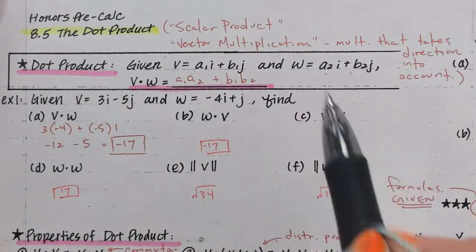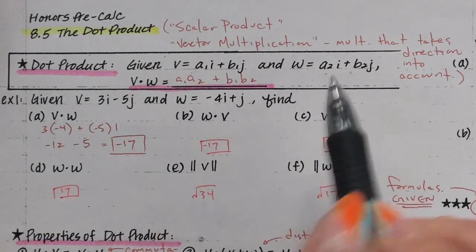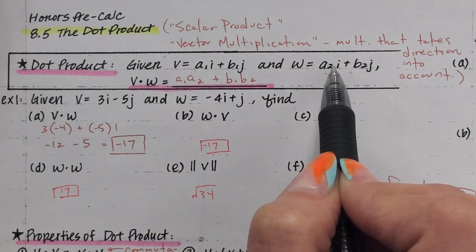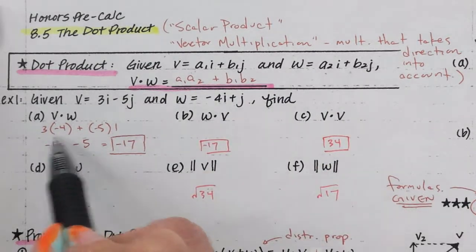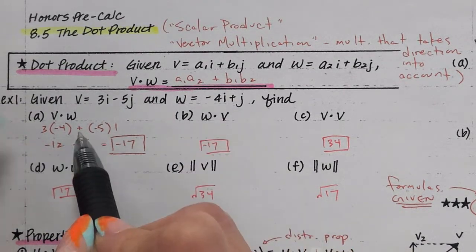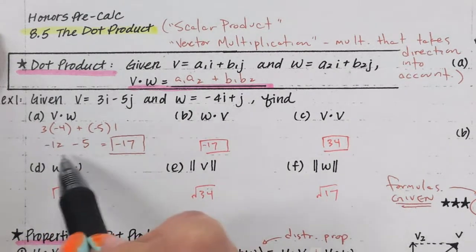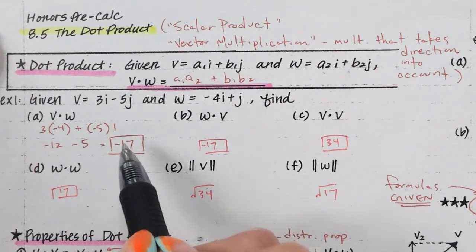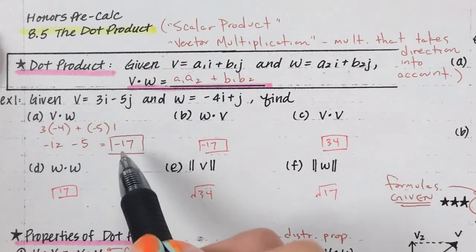Vector multiplication looks something like this. If you have two vectors and you multiply them together, you just take the horizontal components, multiply, take the vertical components, multiply, and then you add that together. In this example it's 3 times negative 4 plus negative 5 times 1, and you add that together for the result and you get negative 17. That's a scalar — a one-number kind of deal. That's why it's also called a scalar product: your end result is a scalar.